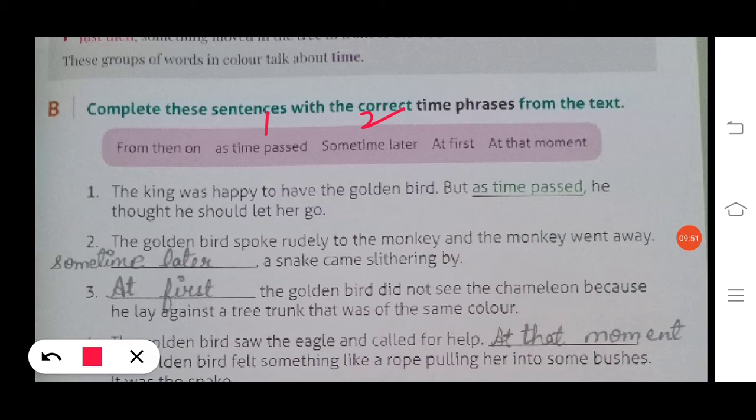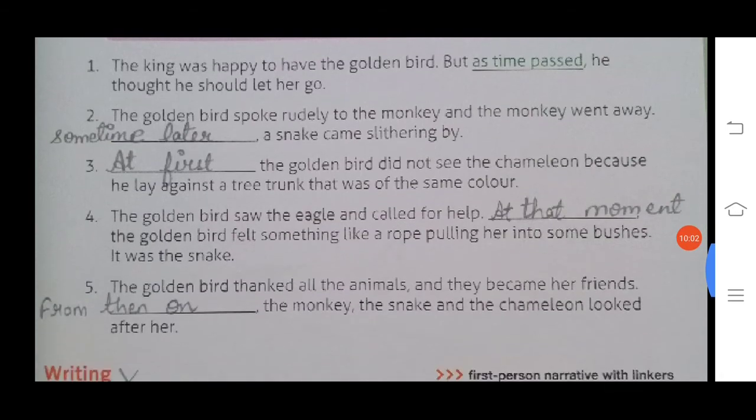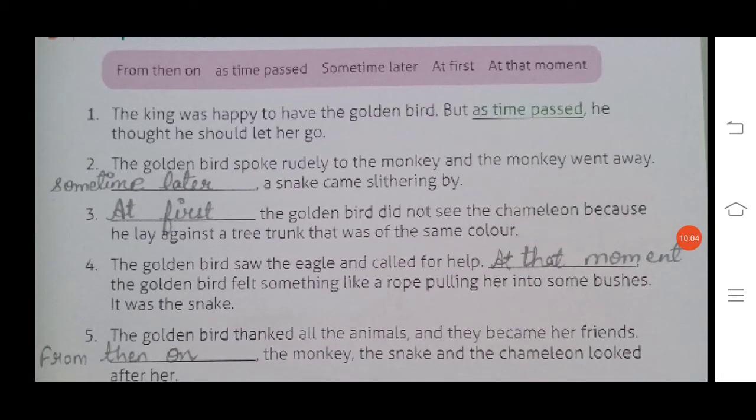Number four: the golden bird saw the eagle and called for help. At that moment, the golden bird felt something like a rope pulling her into some bushes. It was the snake.